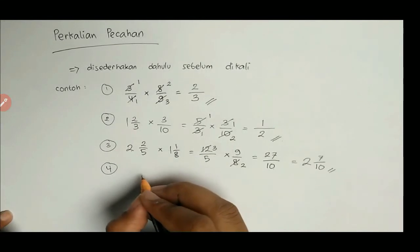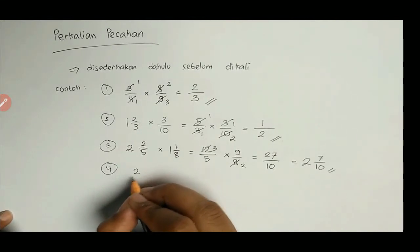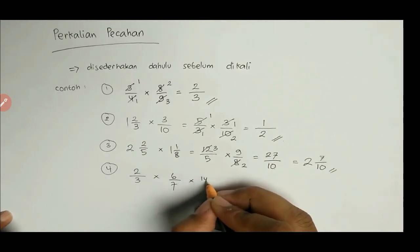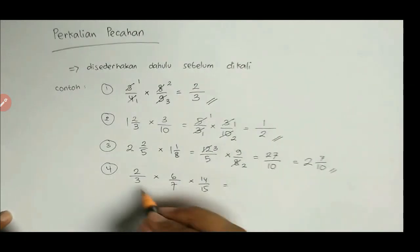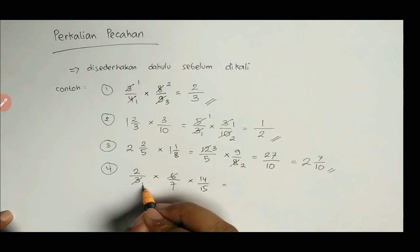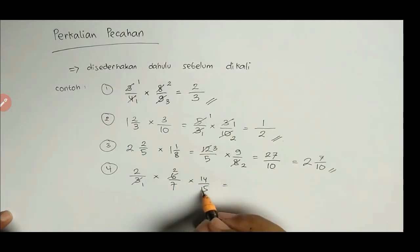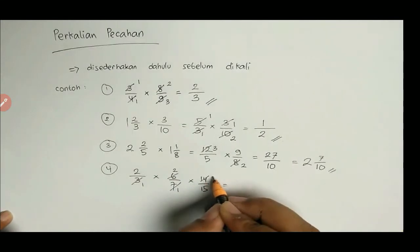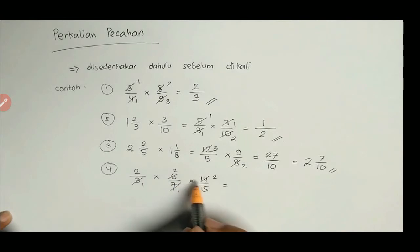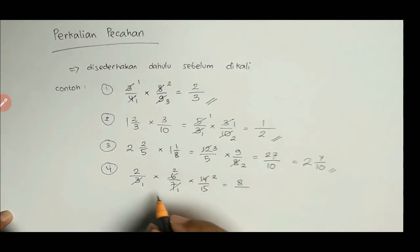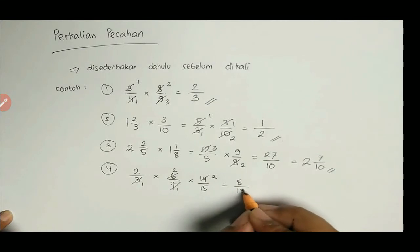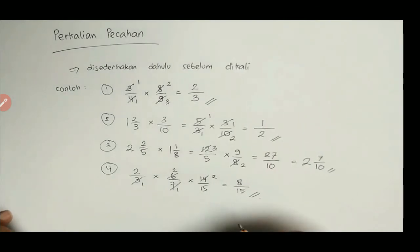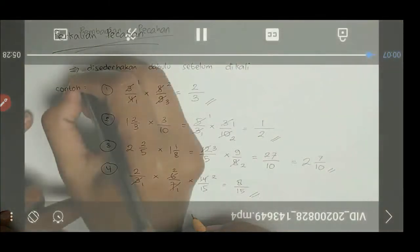Satu contoh lagi: 2/3 dikali 6/7 dikali 14/15. Lebih mudah disederhanakan terlebih dahulu. 6 dan 3: bagi 3 hasilnya 2 dan 1. 14 dan 7: bagi 7 hasilnya 2 dan 1. Tidak ada lagi yang bisa disederhanakan. Sehingga dihitung: 2 × 2 × 2 per 1 × 1 × 15 = 8/15. Nah, inilah yang dimaksud Pak Imam lebih ringkas.